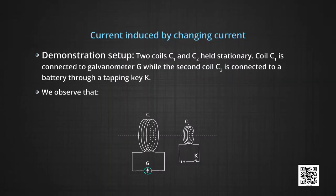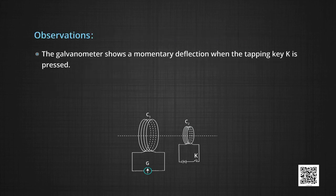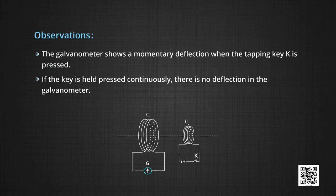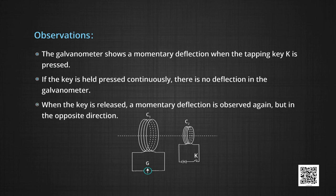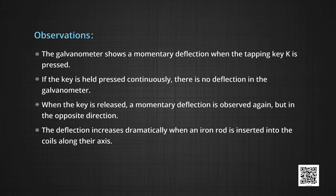Let us look at the third experiment in which there is no relative motion — two coils C1 and C2 held stationary. Coil C1 is connected to galvanometer G, while coil C2 is connected to a battery through a tapping key K. We observe that the galvanometer shows a momentary deflection when the tapping key K is pressed. If the key is held pressed continuously, there is no deflection in the galvanometer. When the key is released, a momentary deflection is observed again but in the opposite direction. The deflection increases dramatically when an iron rod is inserted into the coils along their axis.